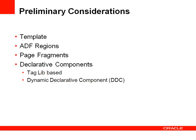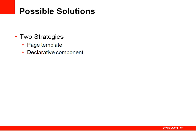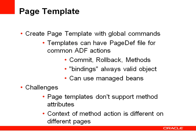From looking at the list of options, the two strategies that seem most promising for our use case are to use a page template or to build a declarative component — just to handle the use case of having a global button bar on the page or view. So let's have a look at page templates.